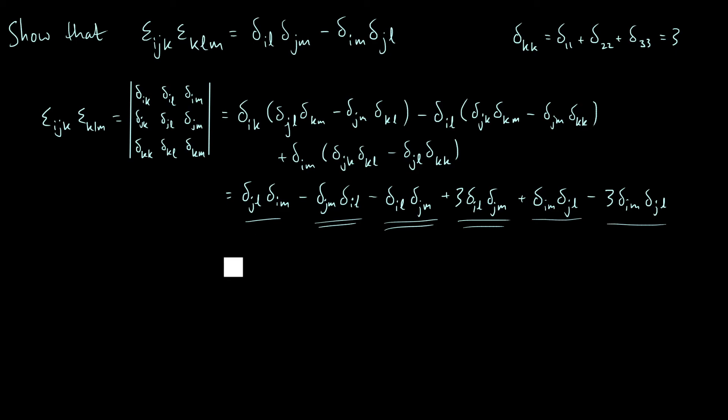And the double underlined terms, well, you've got three of them, and then minus one of them, and minus one of them again. So just one of them in total. So that simplifies to just delta_il delta_jm, which is exactly what we were trying to prove. So as required. So there you are. That's how we can use this more general identity in terms of determinant to show this contracted identity where we sum over this k-index.